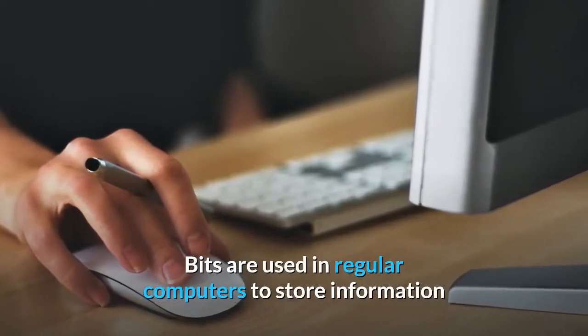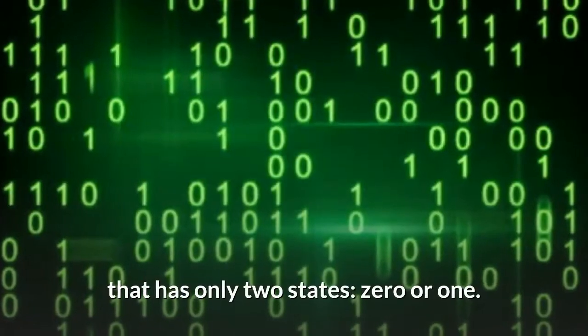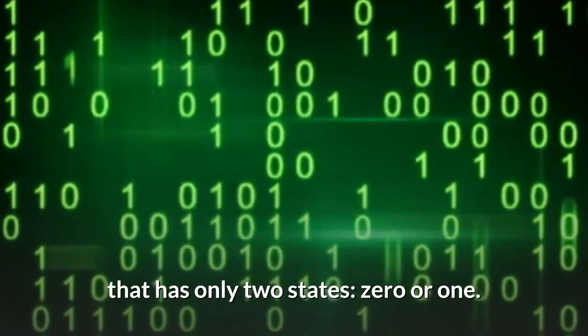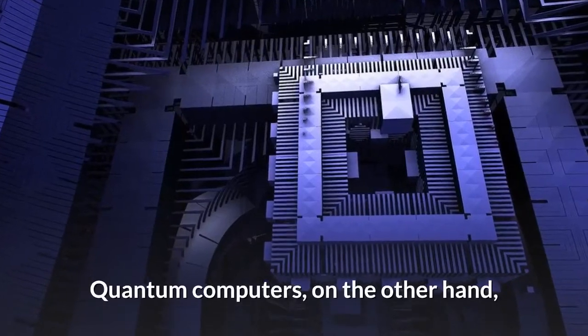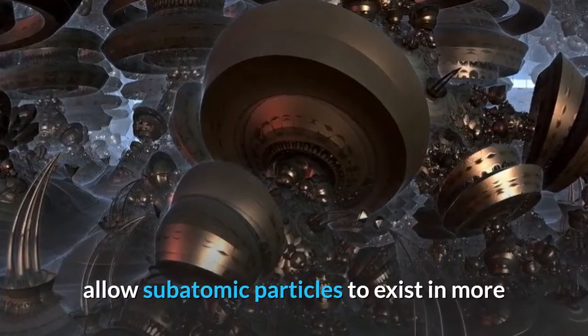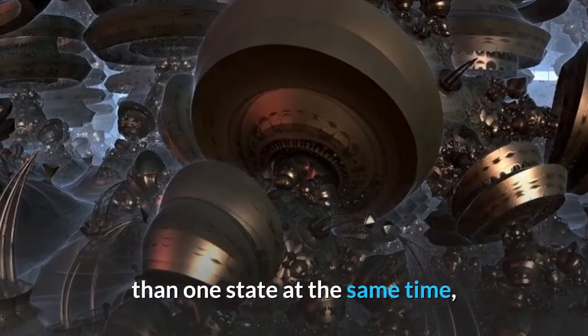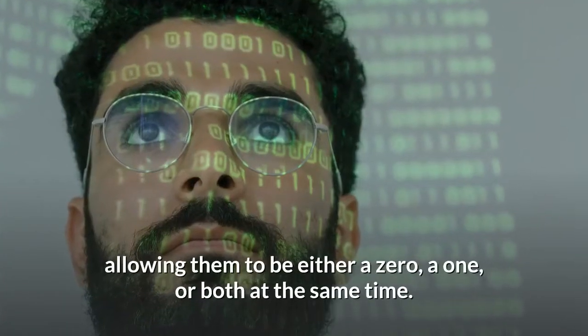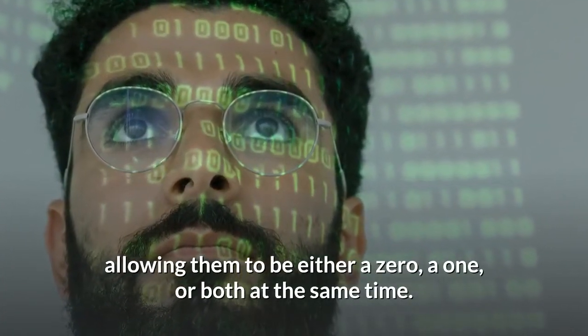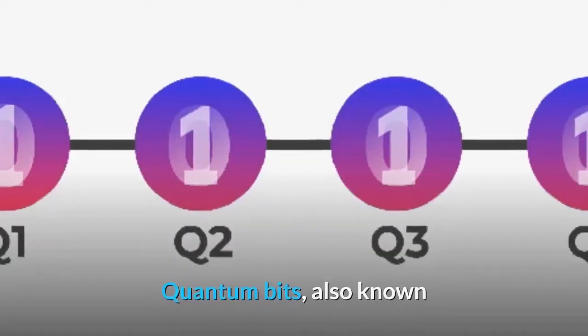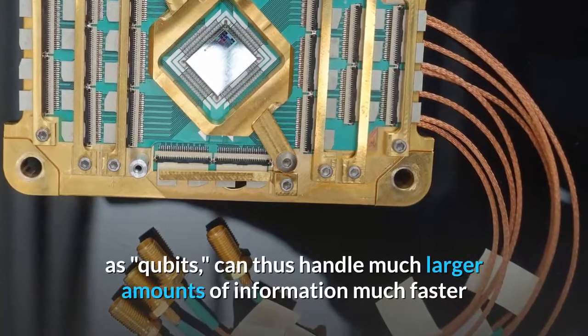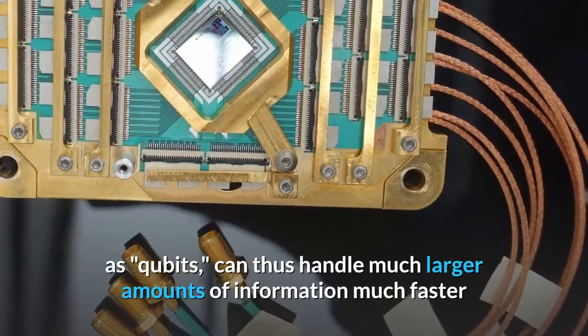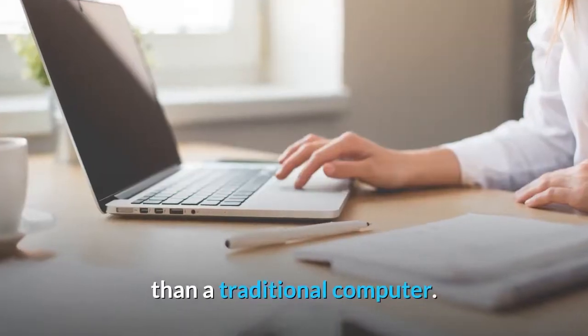Bits are used in regular computers to store information that has only two states. Quantum computers, on the other hand, allow subatomic particles to exist in more than one state at the same time, allowing them to be either a zero, a one, or both at the same time. Quantum bits, also known as qubits, can thus handle much larger amounts of information much faster than a traditional computer.